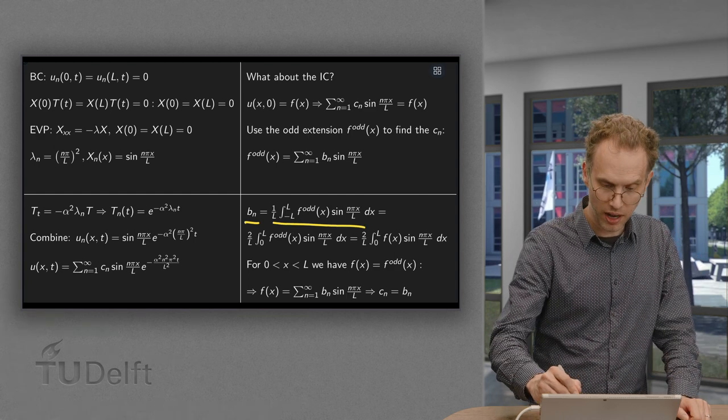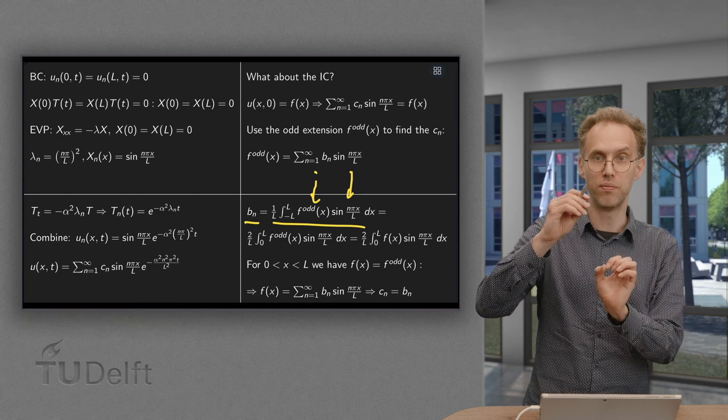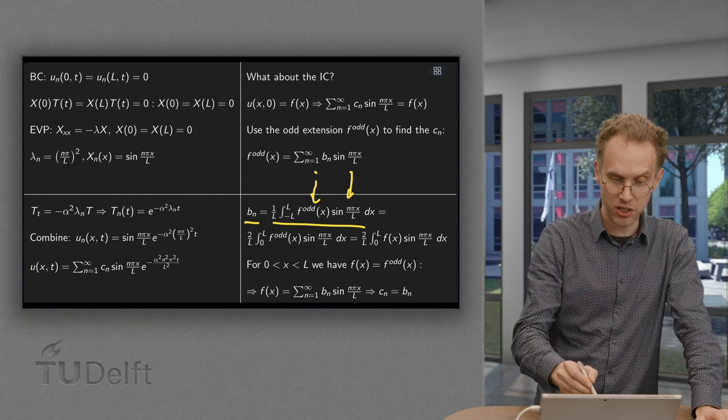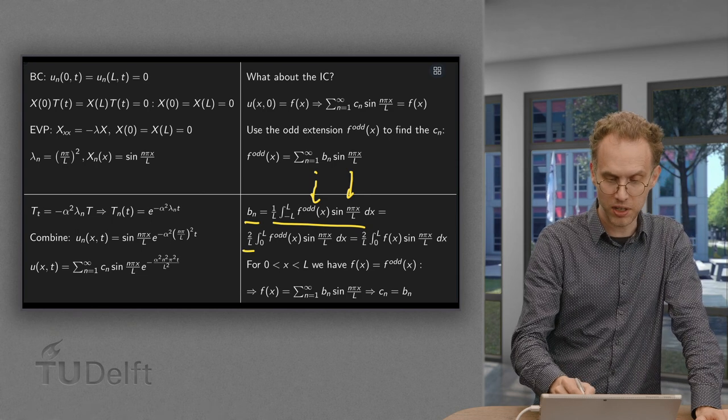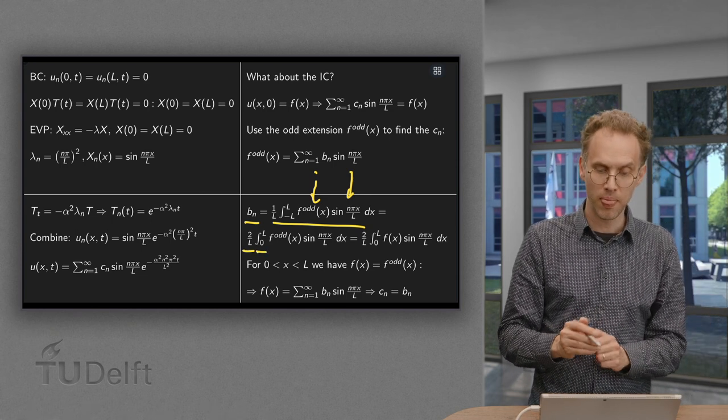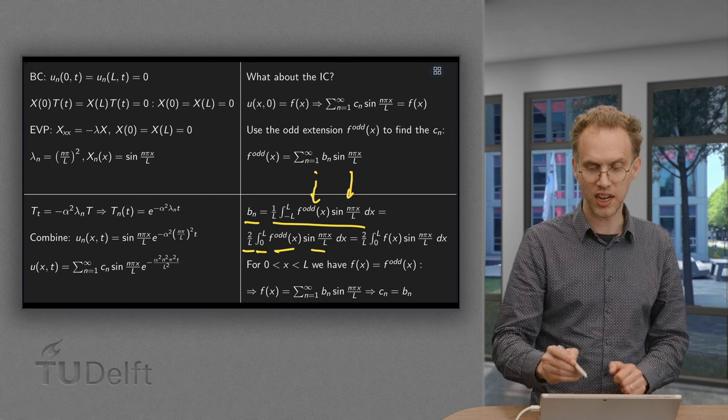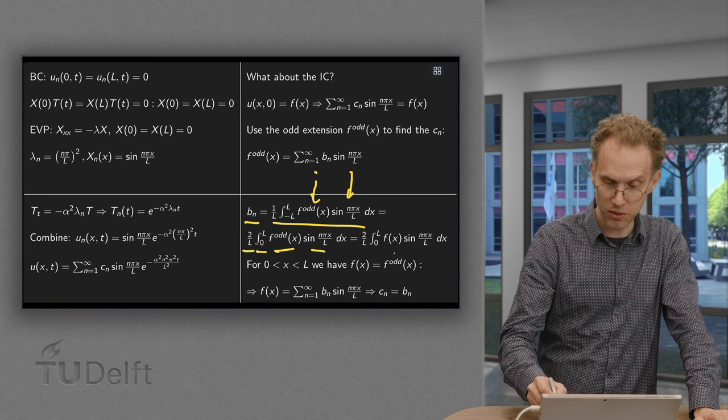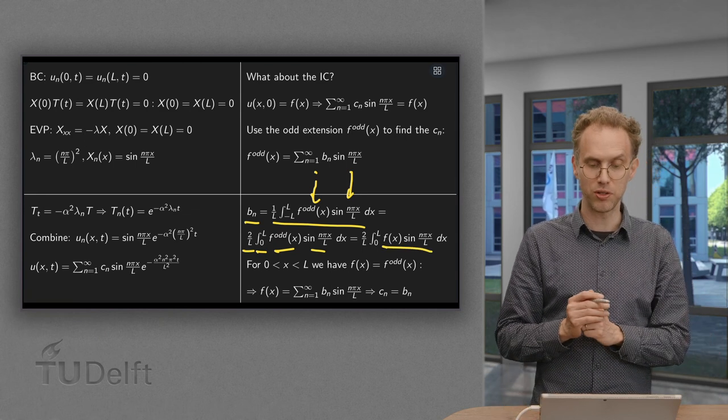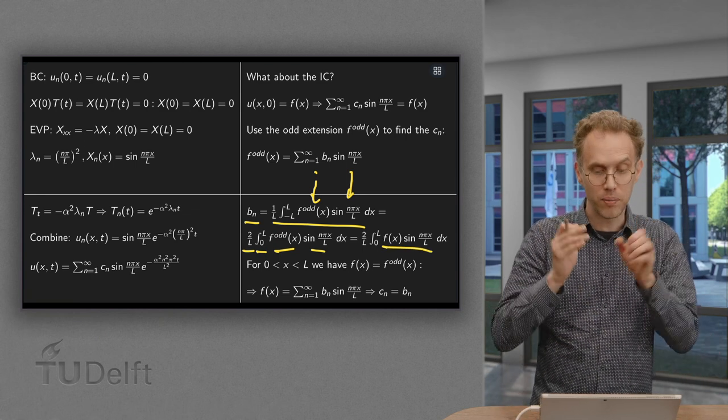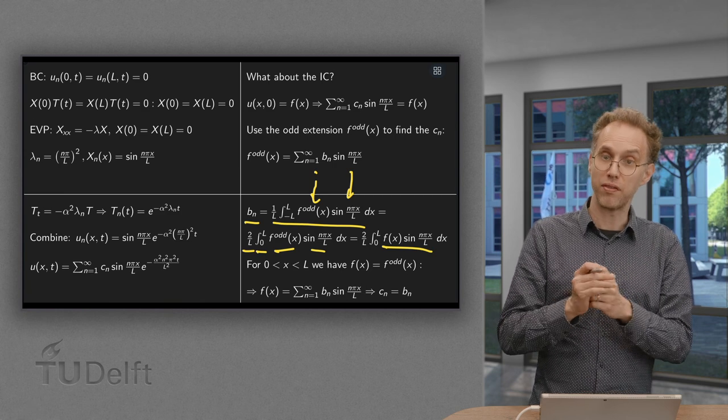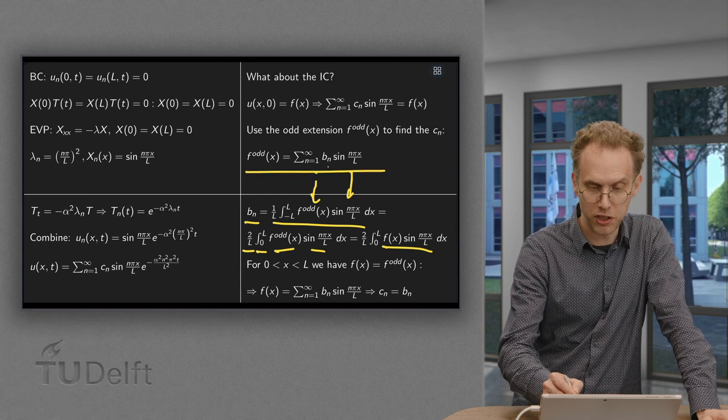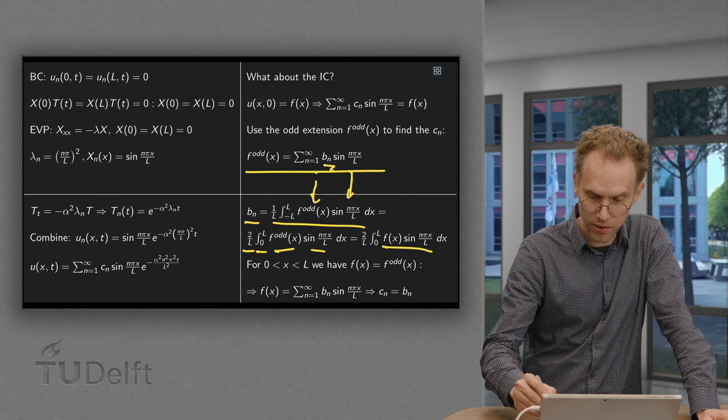Then we know f is odd here, sin is odd here. So the integral of minus L to 0 and the integral from 0 to L are the same. So this equals 2 over L times the integral from 0 to L of f odd times the sin. And between 0 and L, f odd and f are the same. So you can just use your f of X over here to compute your b n. Now between 0 and L, f odd of X and f of X are the same. So f of X has the coefficients b n which are given over here.